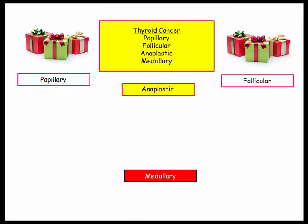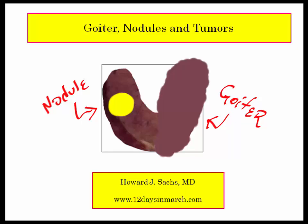We're done with goiter, nodules, and thyroid cancers. Please be familiar with the pathologic descriptors reviewed in this section. Thyroid pathology should really be money in the bank. That concludes our review of the thyroid gland for USMLE Step 1. Contact me if you have any questions or concerns.